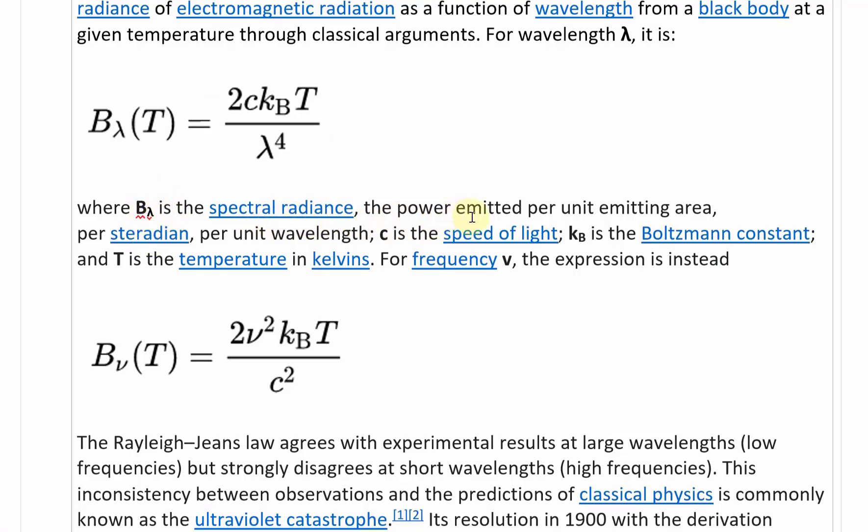Where Bλ is the spectral radiance, the power emitted per unit emitting area per steradian, that's solid angle unit, per unit wavelength, and C is the speed of light, Kb is Boltzmann's constant, and T is the temperature in Kelvin. For frequency ν, I don't know why they use ν instead of f, the expression is instead Bν, this is in wavelengths, this is in frequency.